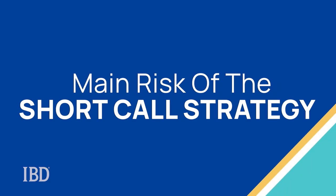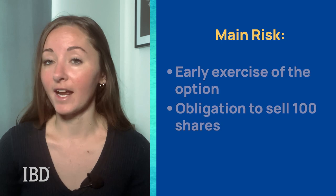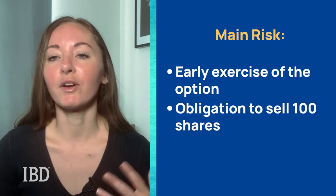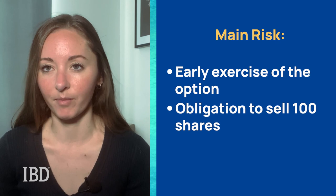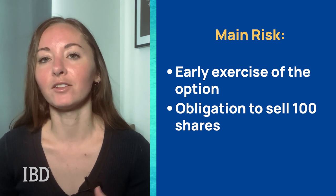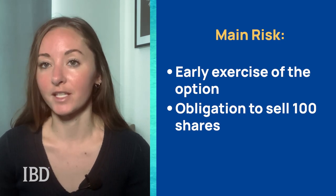Expiring worthless is great because it means you, the option seller, get to keep all of the premium collected when you open the short position. The main risk for a short call strategy is early exercise of the option by the person who bought the call. If they exercise it early for any reason, you are now obligated to sell them 100 shares per contract at the strike price. This is why you need a large collateral position, because upon exercise you will be short 100 shares per contract. It should be noted that early exercise is fairly rare unless the option is in the money near expiration.